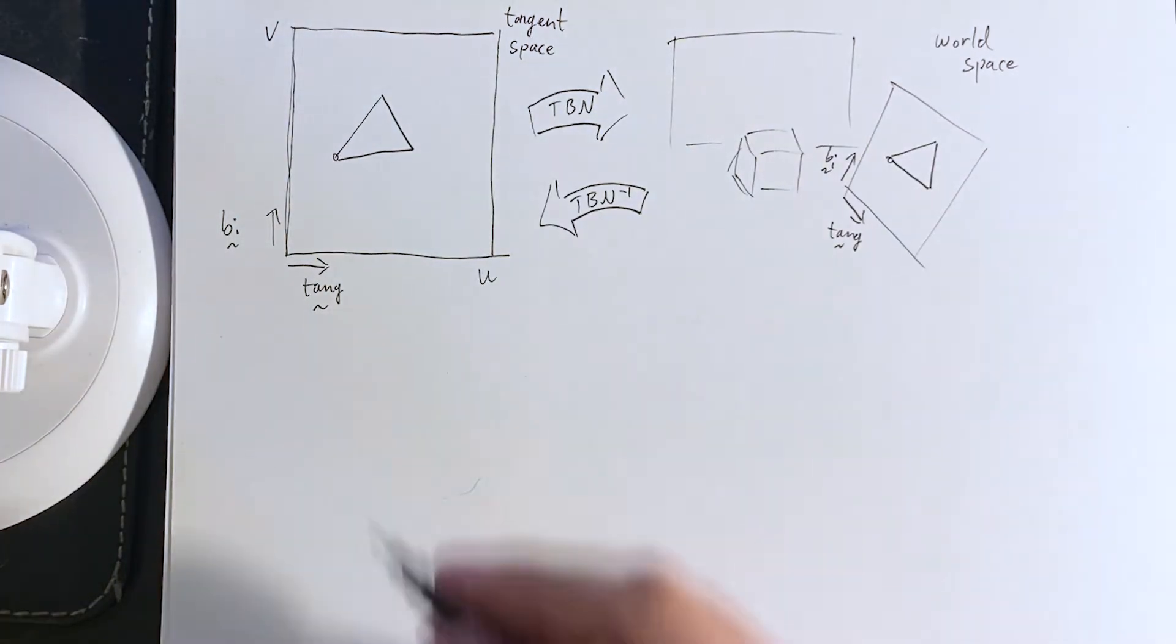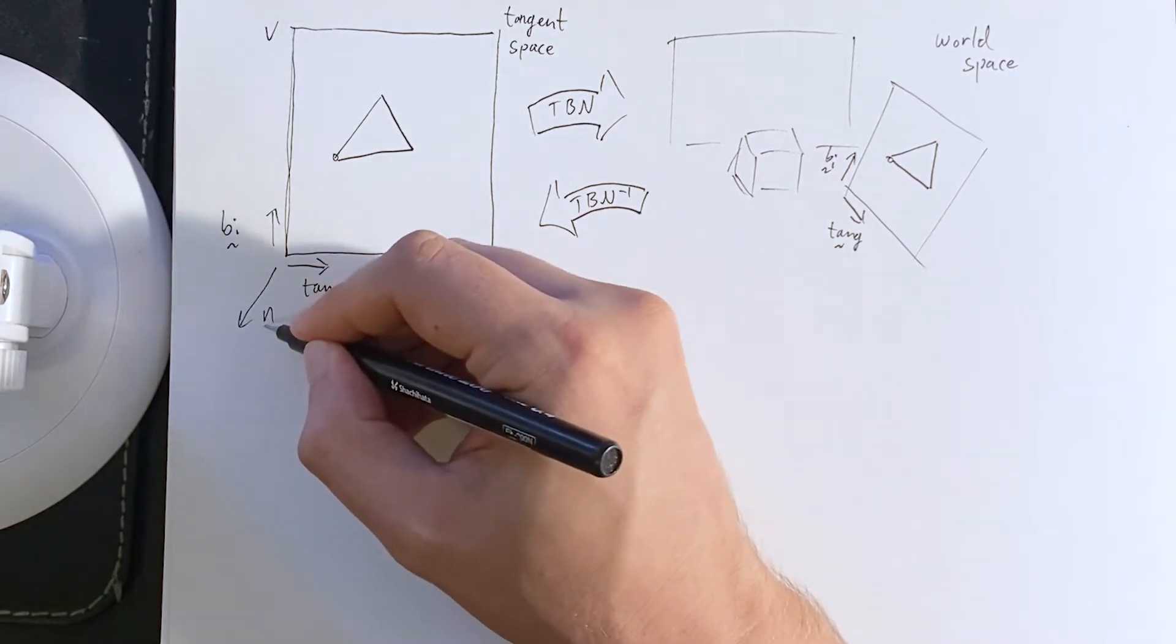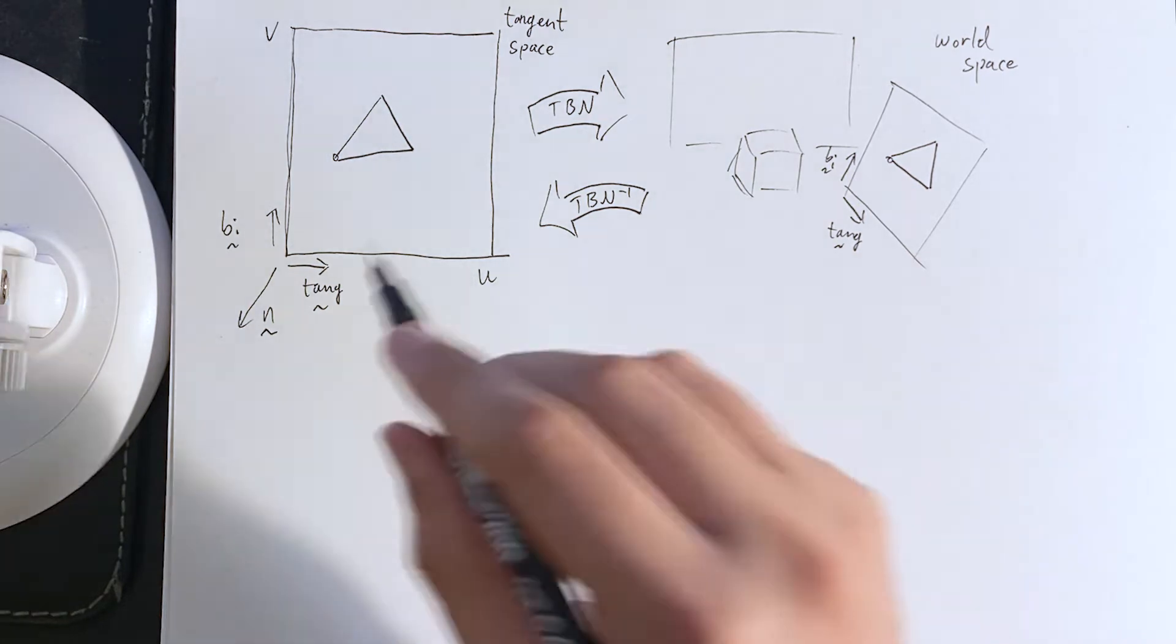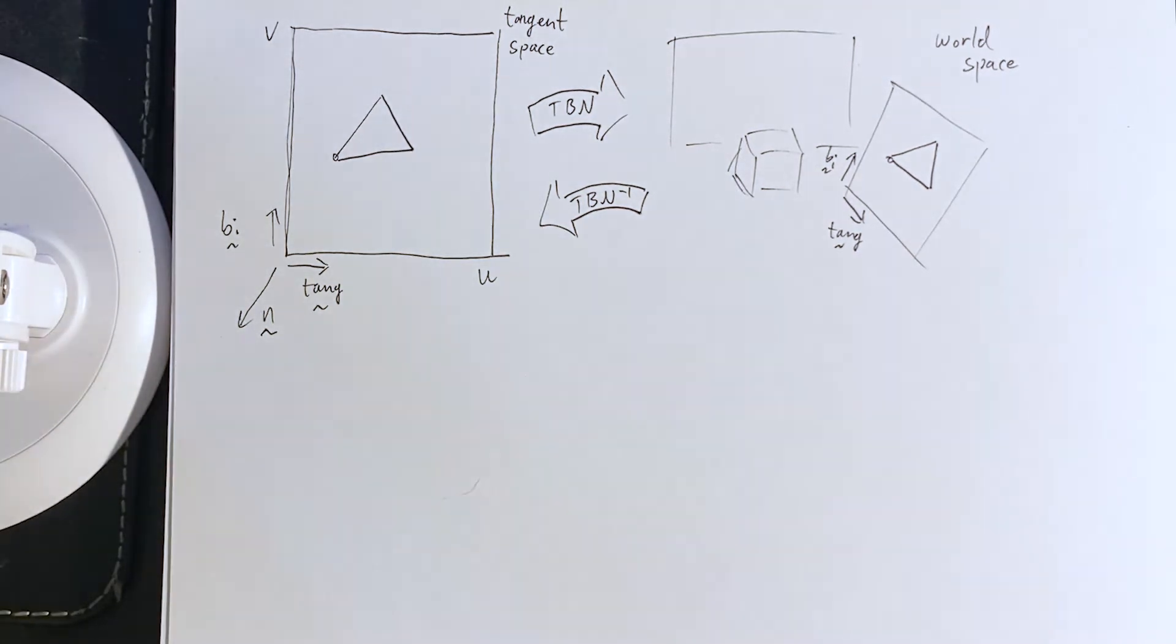By the way, we also have a normal vector. And, by default, in tangent space, the normal vector will be in or out of the page.